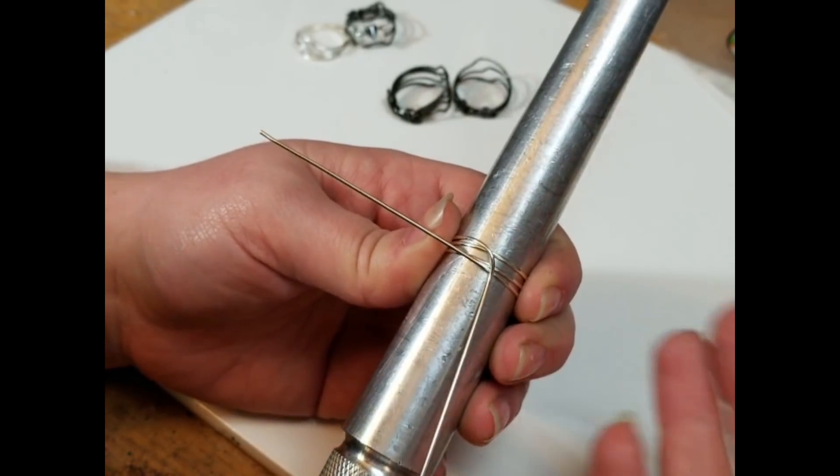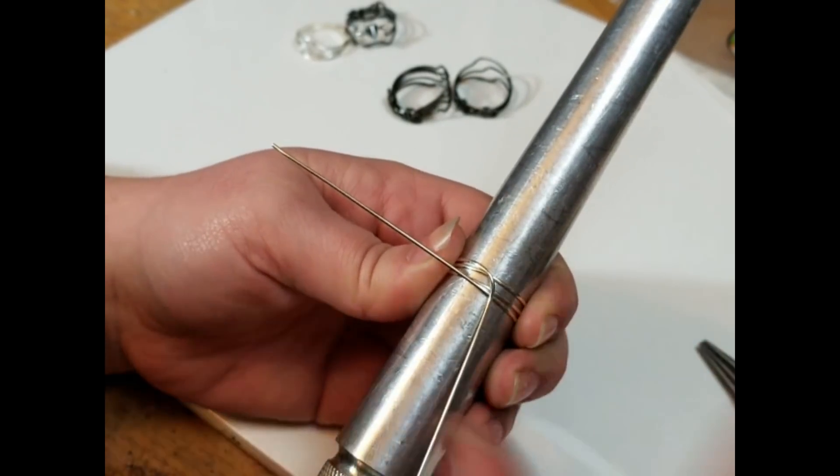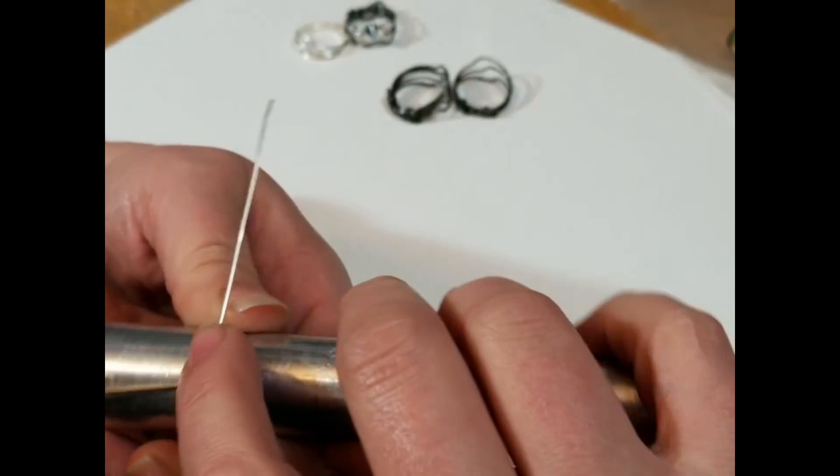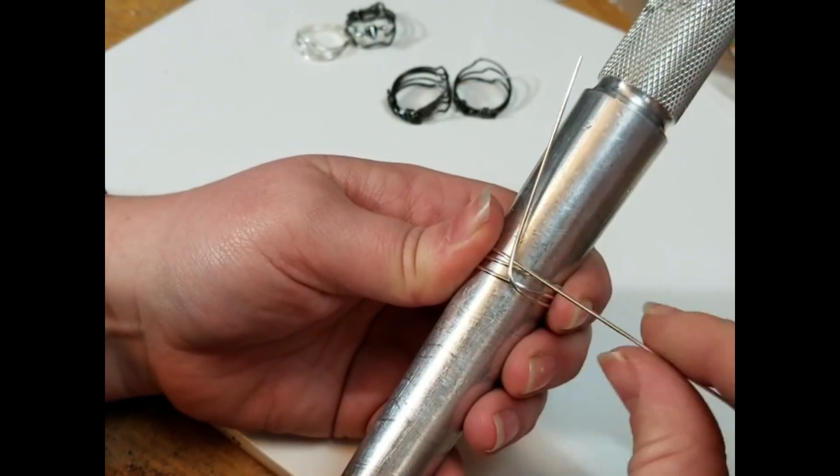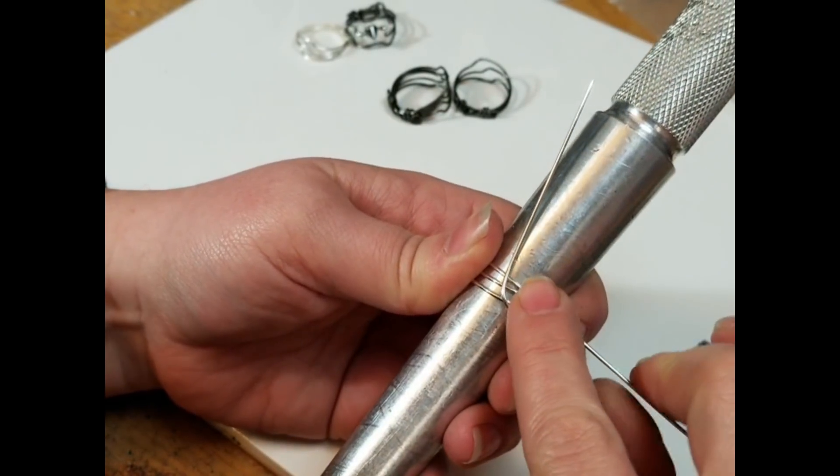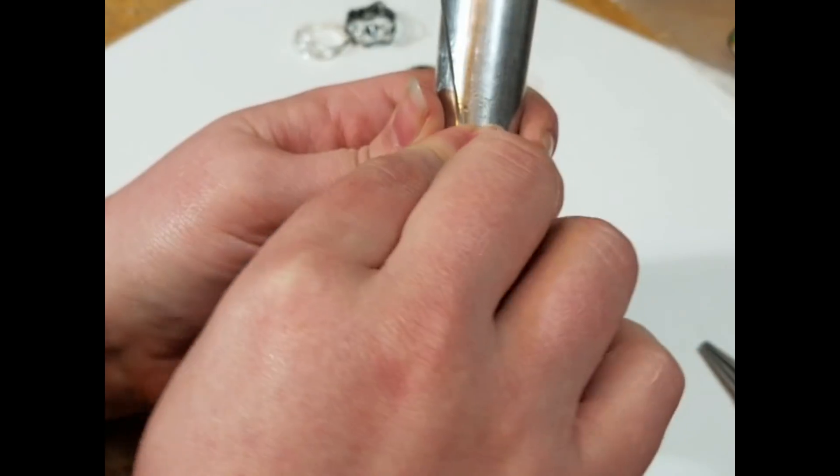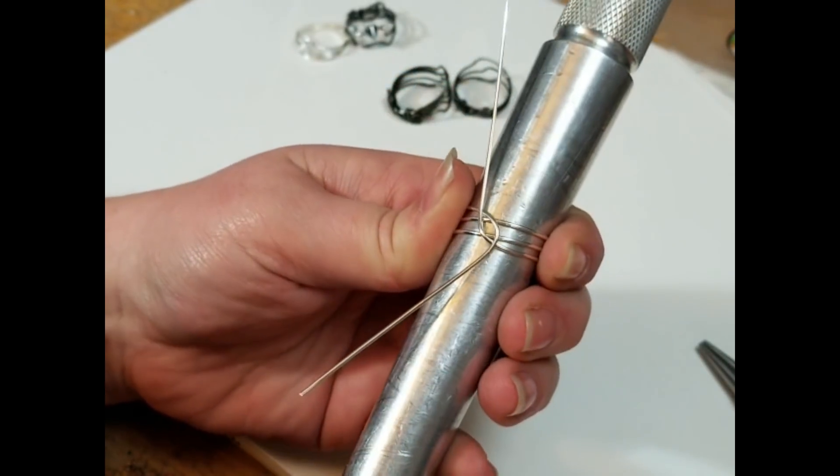And so now, making sure that I haven't twisted my wire or anything like that, I'm holding it quite securely. And I'm going to pin it with my finger against the mandrel and grab the tail wire here and just bend at a 90 degree. Pinning it keeps your wire from twisting. And again, if you're using round wire, this matters significantly less, but with the half round, it makes a huge difference.